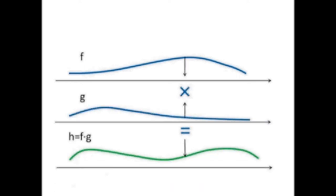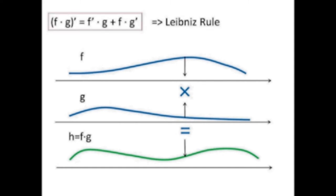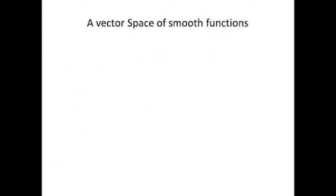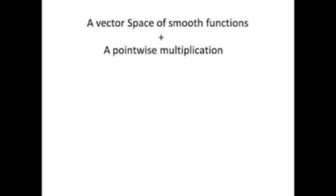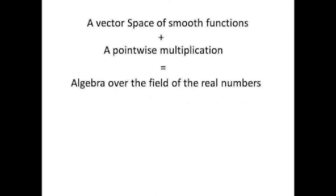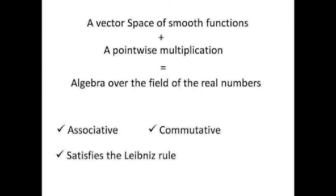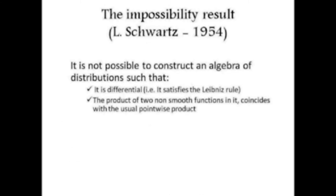Given smooth functions f and g, you can define the pointwise product, which gives another smooth function. This product satisfies the Leibniz rule. Smooth functions form a vector space, and a vector space equipped with a pointwise multiplication — which is a bilinear map — forms an algebra over the real numbers that is associative, commutative, and satisfies the Leibniz rule.